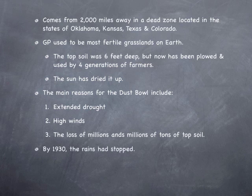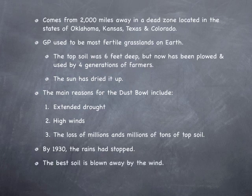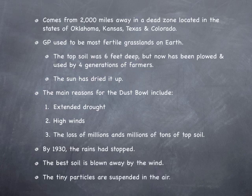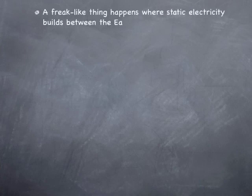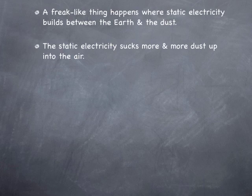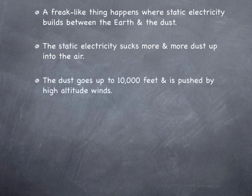By 1930, the rains had stopped. The best soil was blown away by the wind, and the tiny particles were suspended in the air. A freak-like thing happens where static electricity builds up between the earth and the dust — it sucks more and more dust up into the air, almost like a magnet. I used the example in class of a sock being stuck to a shirt out of the clothes dryer — the static electricity just pulls it to it.